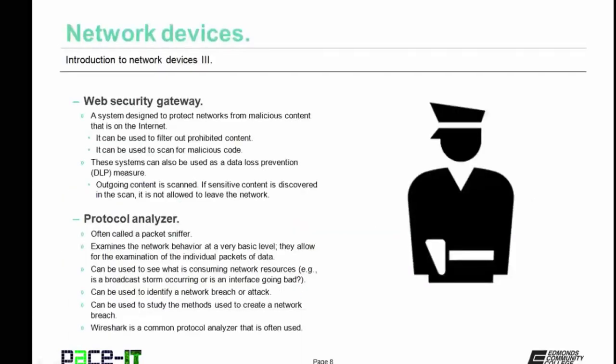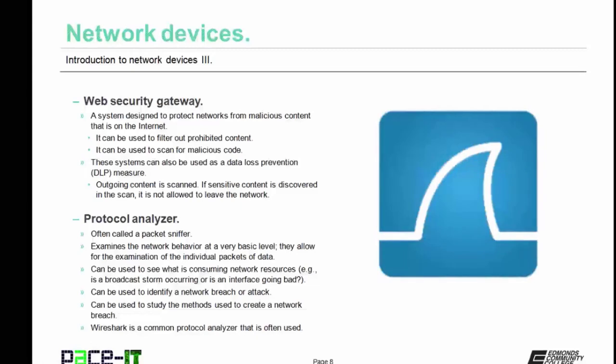Now let's move on to a brief discussion of some network devices. First up is the Web Security Gateway. It's a system designed to protect networks from malicious content on the internet. It can be used to filter out prohibited content and to scan for malicious code. In some cases, these systems can also be used as a data loss prevention measure — all outgoing content is scanned, and if sensitive content is discovered, it's not allowed to leave the network. This helps entities to keep their secrets within their own networks.